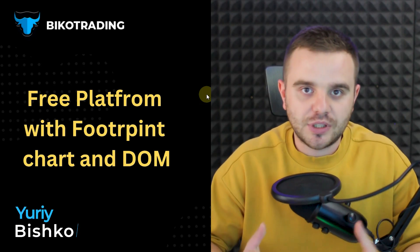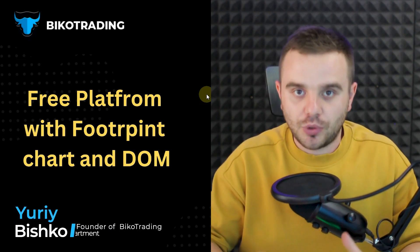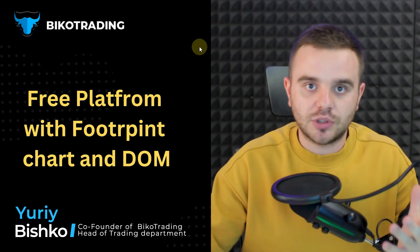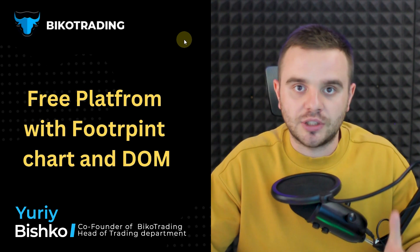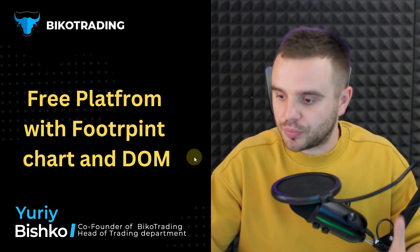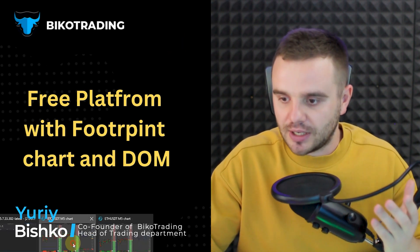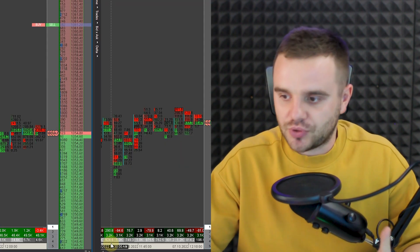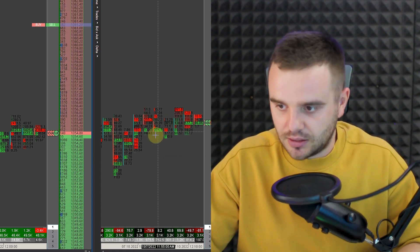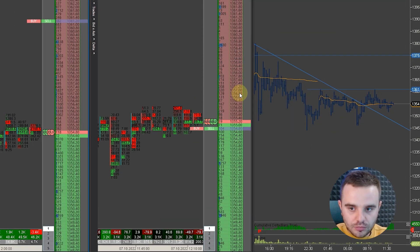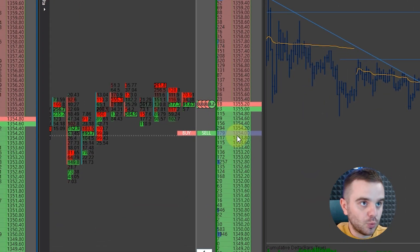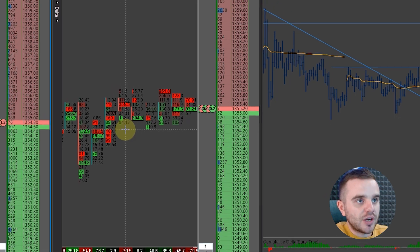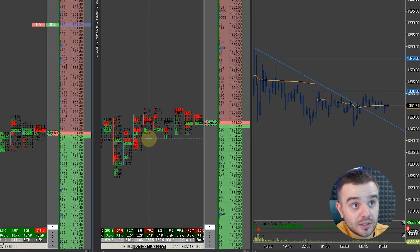When you start your path in crypto scalping, the first thing you need is a powerful platform where you will have access to all data — dome and footprint — that will help you analyze price and make really awesome trades. The dome shows all limit orders by whales, and the footprint shows trades that whales did.